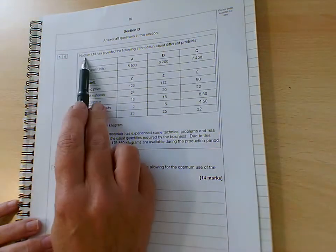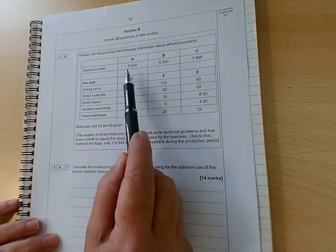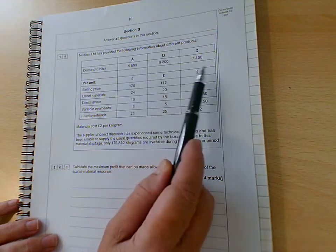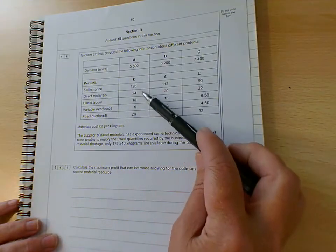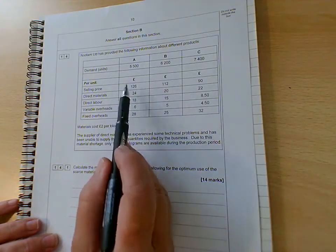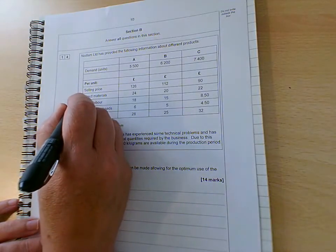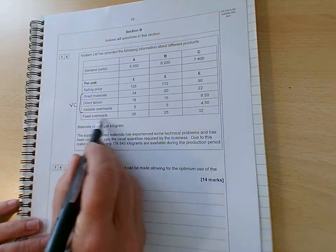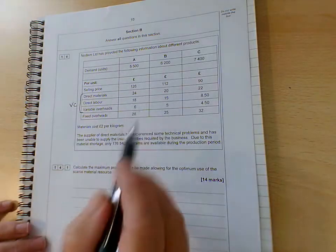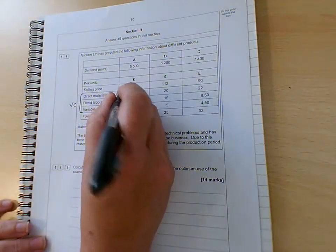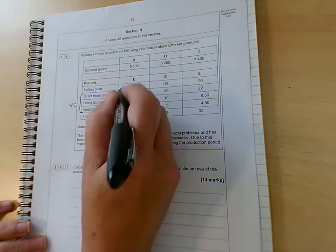So we're given a table here, the company's got three different products A, B and C, and the demand in units is as follows. So there's no point making any more than we've got demand for and in an ideal world we'd make all of these units. So we've given some information here about the price structure, so we've got the selling price, we've got the direct materials, direct labour, variable overheads, so we can pull out our variable cost there and then we've got the fixed cost there, the fixed overheads £28. So because it's marginal costing we're going to be focusing on contribution. Contribution is going to be the selling price minus the direct costs, so that'll give us the contribution per unit.